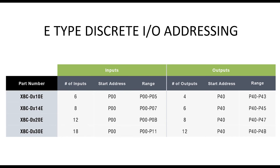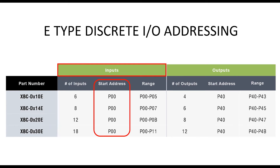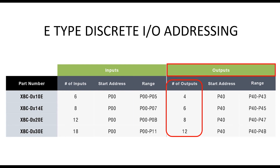This chart shows the discrete I/O address range for the E type PLCs. The part numbers are formatted for the total discrete I/O. The number of discrete inputs are shown in this column — inputs start at P00, and the range is shown for each PLC model. The number of outputs are listed in this column, and the E and SU type PLC discrete outputs start at P40 and are ranged as shown.